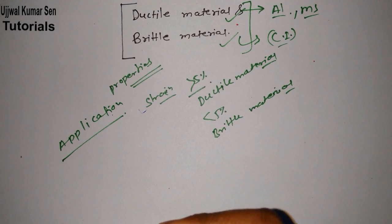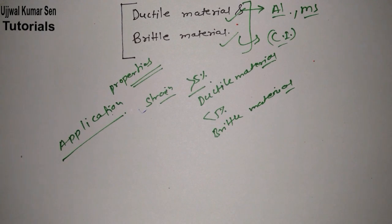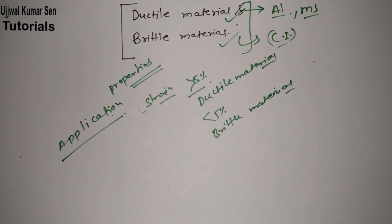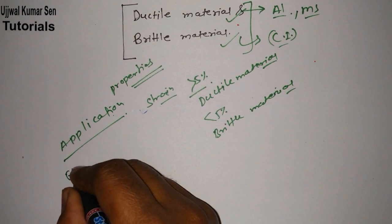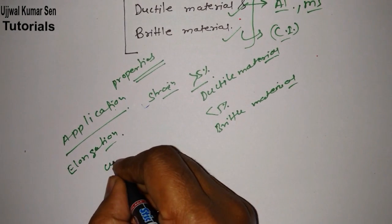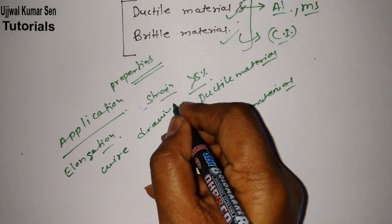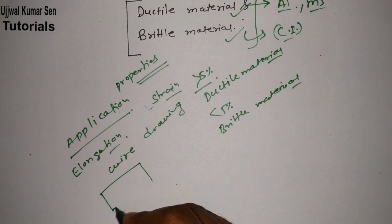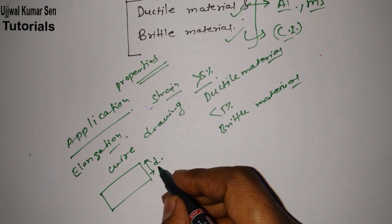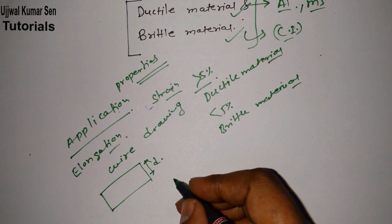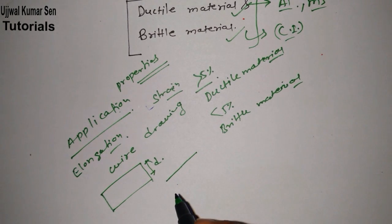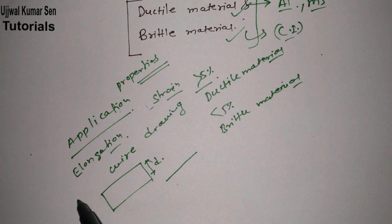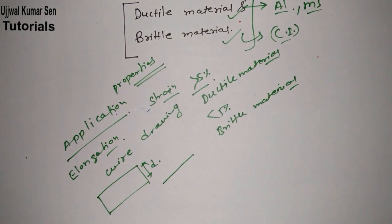Now, talking about applications — where we use ductile material and where we use brittle material. This is really interesting. Suppose elongation work is required, just like wire drawing. Wire drawing is an operation usually studied in manufacturing processes. Suppose we have a thick wire and we want to decrease its thickness drastically, like making a thread. We can do the wire drawing operation and elongation will take place — that material is known as a ductile material.